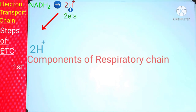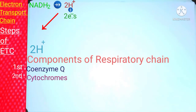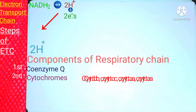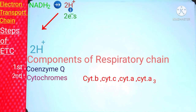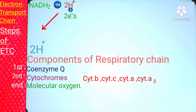The first component of ETC is coenzyme Q. The second component is cytochromes, present in a series named cytochrome B, cytochrome C, cytochrome A, and cytochrome A3. At the end, molecular oxygen takes part. By the combination of all these three things collectively, the electron transport chain is formed.